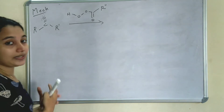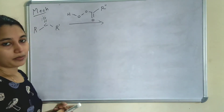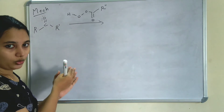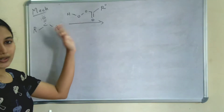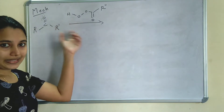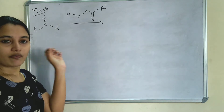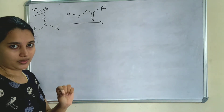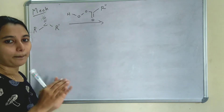Now we can see the detailed mechanism of Baeyer-Villiger Oxidation. First we are taking a ketone, R-C double bond O-R', and a peracid. What is a peracid? R-C-O₃-H — three oxygens are there in peracid. When R-C-O₂-H, it is called carboxylic acid. R-C-O₃-H is called peracid.